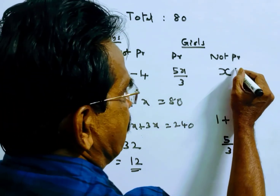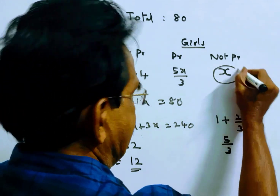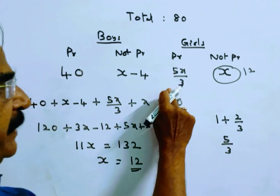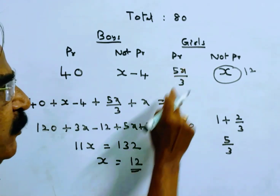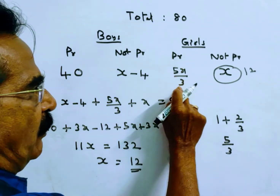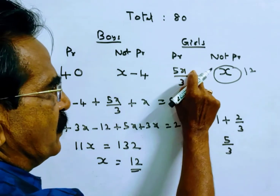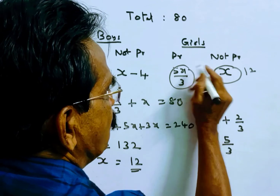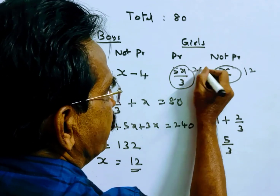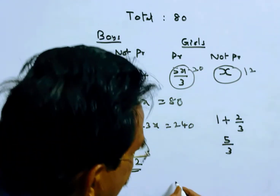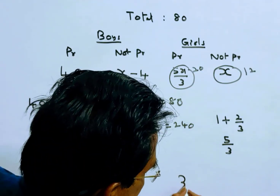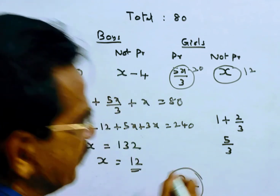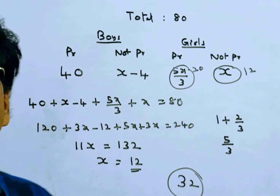Friends, we want the total number of girls in the class. Total number of girls is girls not present plus girls present: x plus 5 by 3 of x, which is 12 plus 5 by 3 into 12, giving 12 plus 20 equals 32. So 32 is the total number of girls in the class.